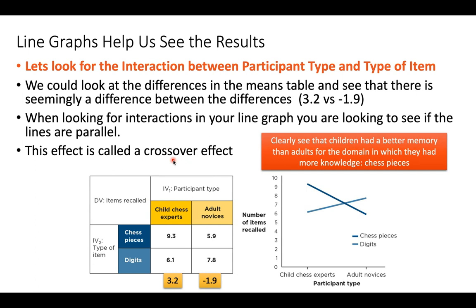Looking at the means table, it becomes really obvious that an interaction is occurring. Child chess experts are really good at remembering chess pieces and much less good at remembering digits — they have a substantial drop-off. It seems strange that remembering a string of numbers would be harder than a chess layout, until we remember that these are child chess experts. They have expertise in remembering the layout of chess pieces, so remembering digits reflects their pure memory capacity without that expertise. We see a really big drop-off when they move from chess pieces to digits.